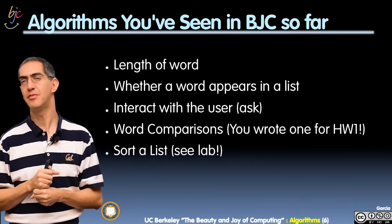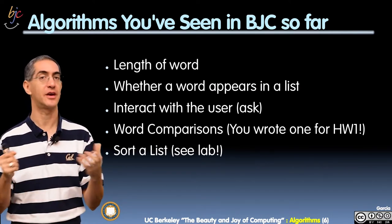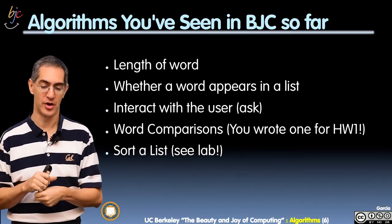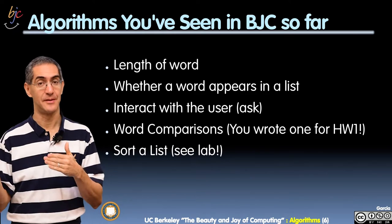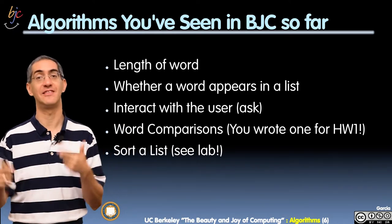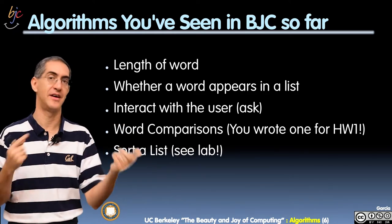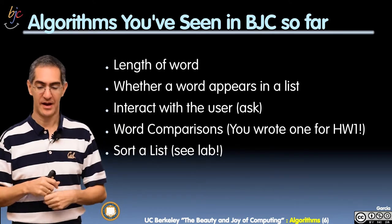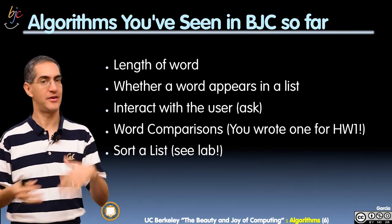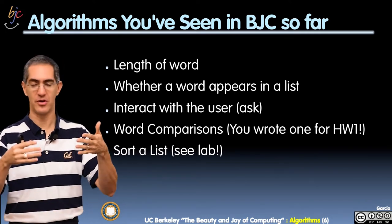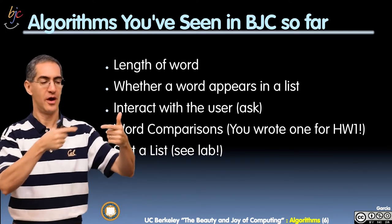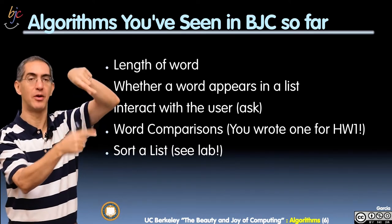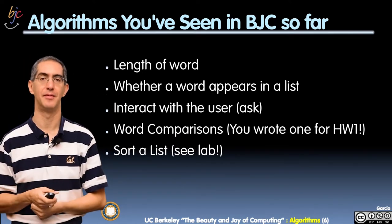So what have you seen in Beauty and Joy Computing so far? Here are some common algorithms from the labs: how to compute the length of a word, whether a word appears in a list, and — if the list is sorted — how to be more clever about finding a word. How to interact with a user, and comparing words, like the homework where you had a guest word and a user-typed word and were checking which letters were the same.